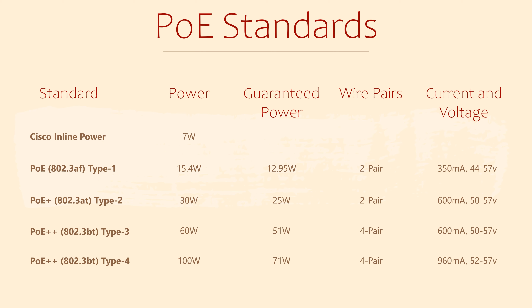But why stop there? We now have two additional PoE++ standards called Type 3 and Type 4, and they can deliver 60 and 100 watts per port. Cisco have their own versions of these called UPoE and UPoE Plus. Most notably, these standards power up to two pairs of wires in the network cable. These higher powered standards are good for teleconferencing solutions, kiosk terminals, small switches, laptops and small TV screens.